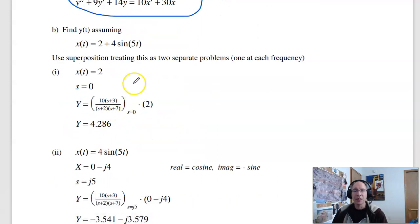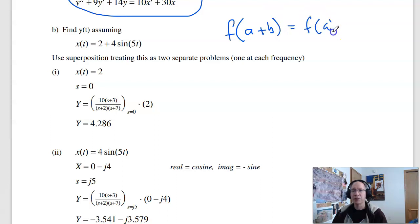Part B tries to find the output when I have the input is 2 plus 4 sine of 5t. This uses the factor for the property of linearity. Linearity says if I have f of a plus b, that's f of a plus f of b. So if I have two inputs, treat that like two separate problems. This one's at DC, that one's at AC.